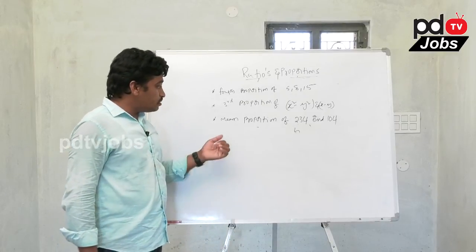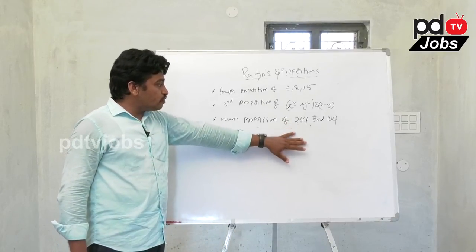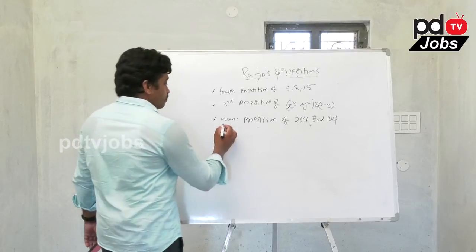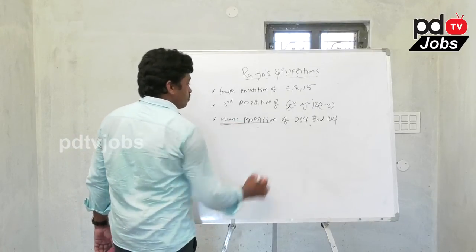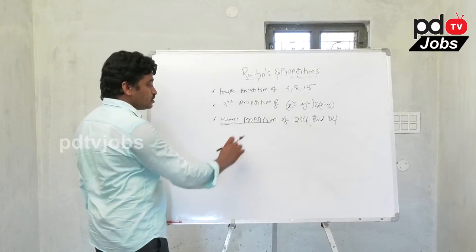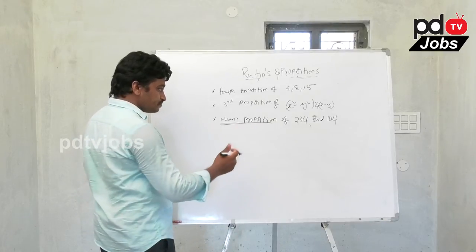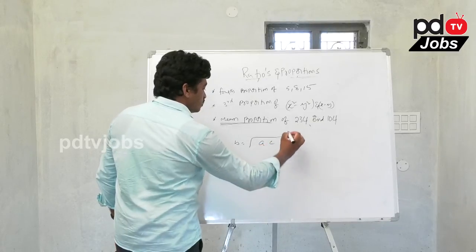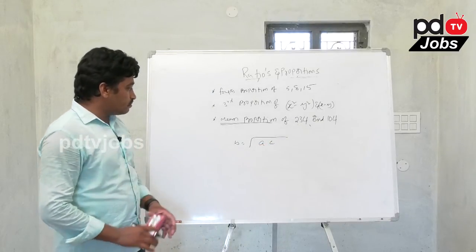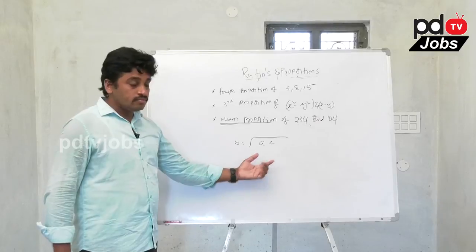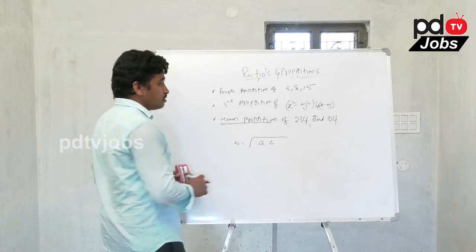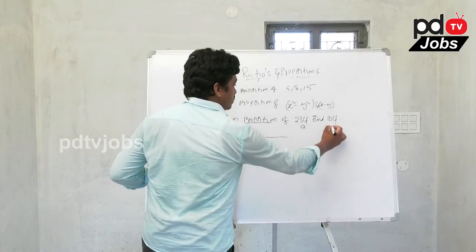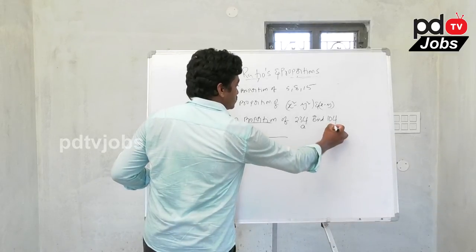Next, mean proportion. Find the mean proportion of 234 and 104. The formula for mean proportion is b = square root of ac. The first term is taken as a and the second term is taken as c.